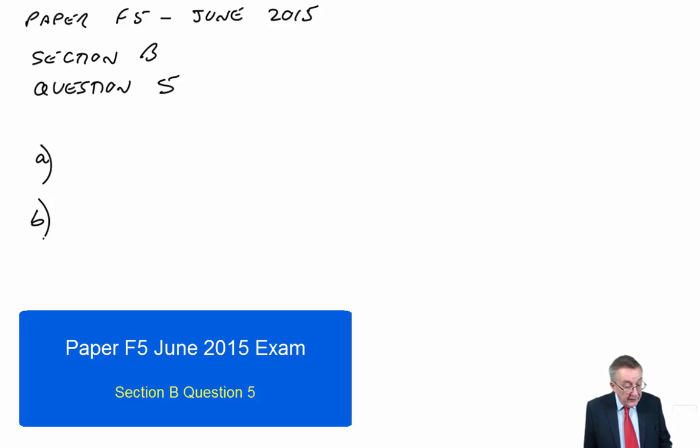Part B: discuss the problems we may have if you decide to introduce zero-based budgeting to prepare budgets for the coming year. Now here you would need to start reading down the question. But really the most obvious, I think the most important problem is the last paragraph of the question. They're about to begin preparing its budget for the coming year, which starts in one month's time.